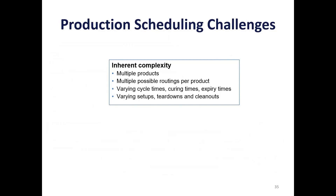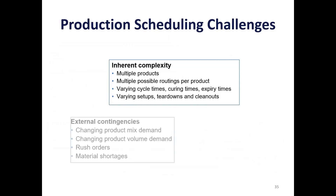In a production facility, there is inherent complexity. A modern facility is producing multiple products, often with multiple possible routings. These routings might involve varying cycle times, curing times, and expiring times. And as you change between products, the setups, teardowns, and cleanouts are going to vary.